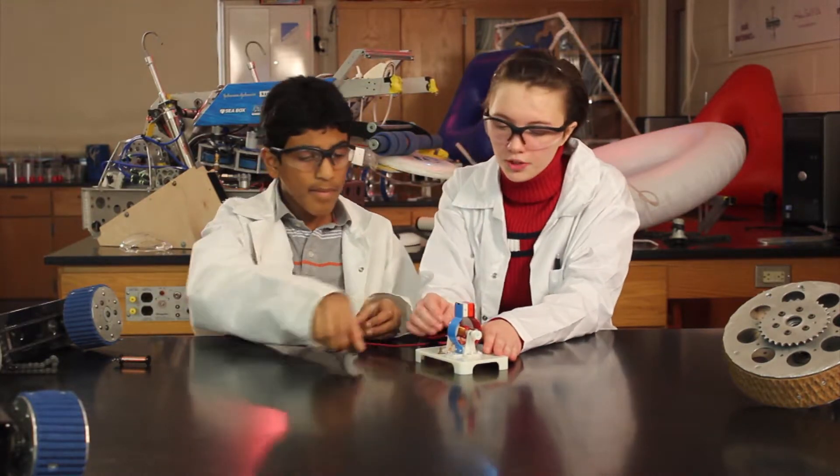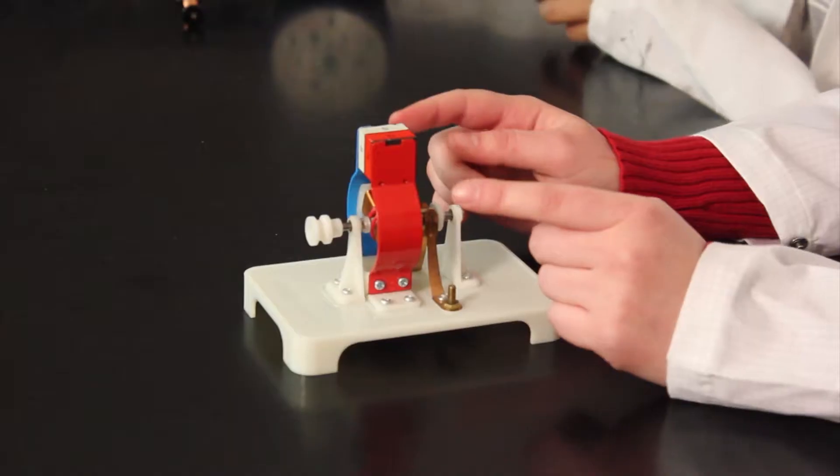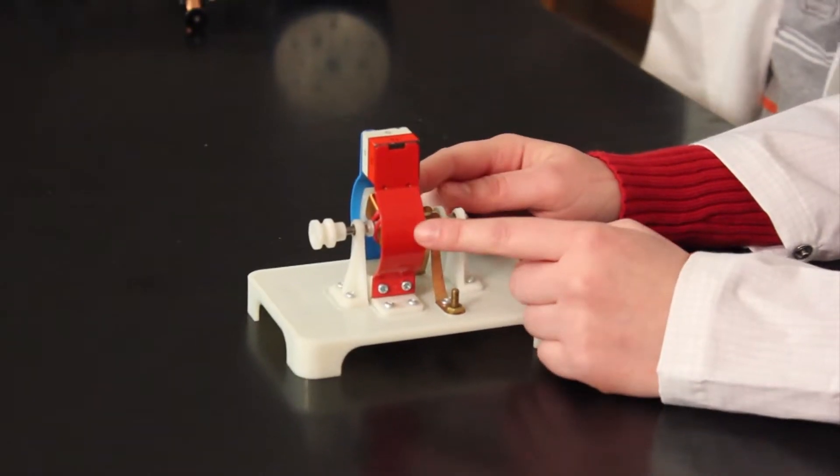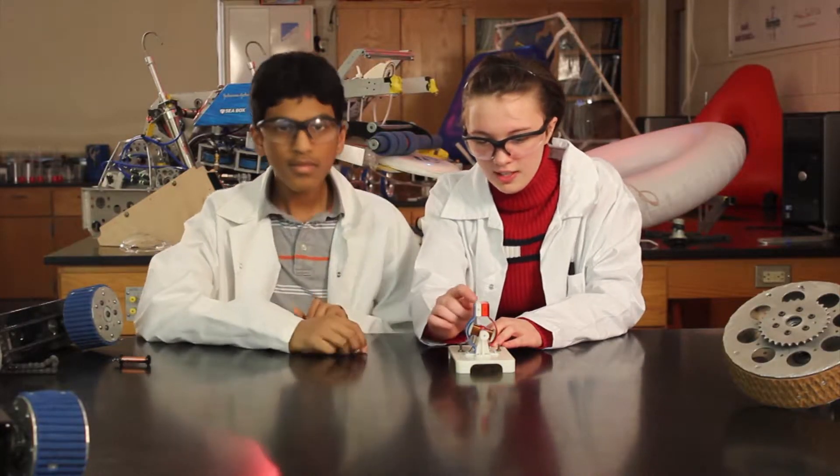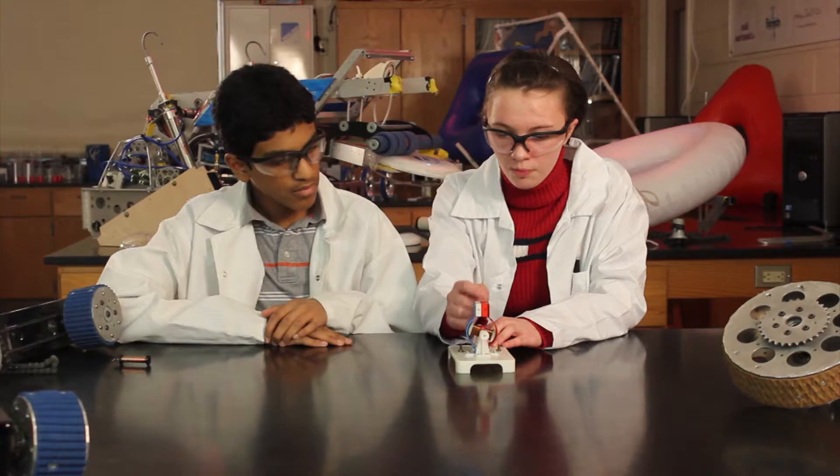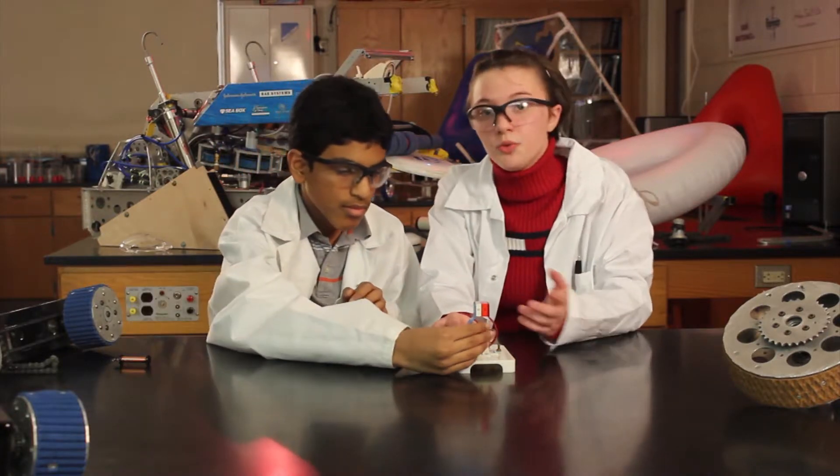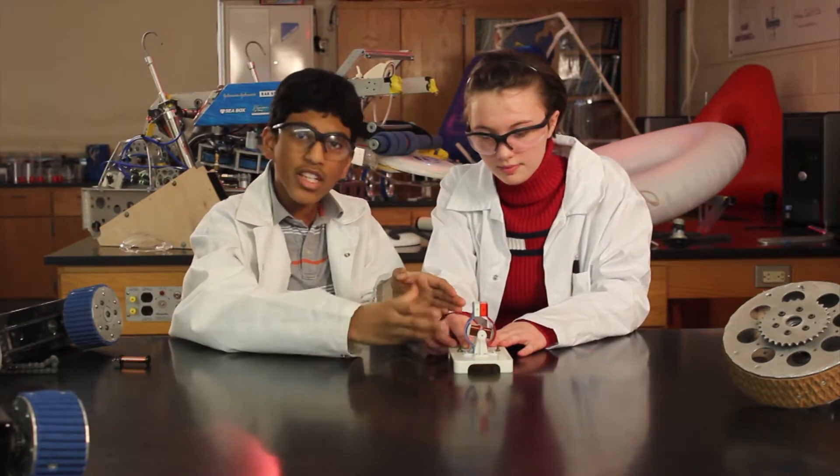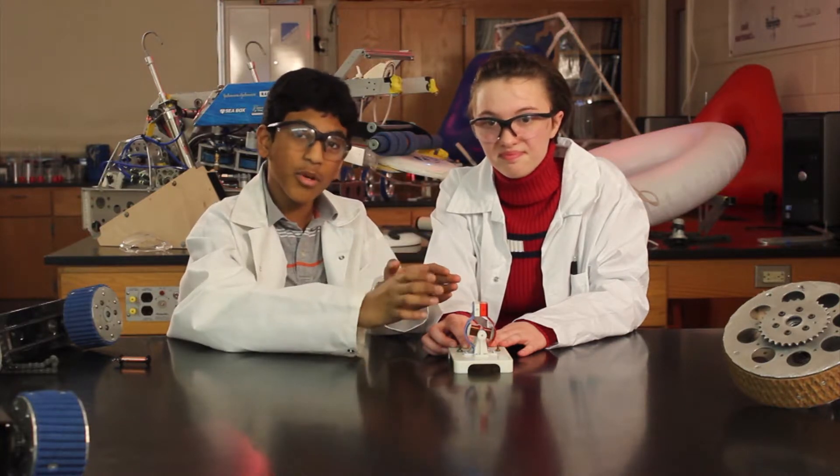Now, the way this works is the electricity flows through the opposite ends of the wire and makes a magnetic field around the coil, just like you saw in the last experiment. Now, this magnetic field interacts with the magnet at the top of the motor. It is attracted first and then repelled by the other end of the magnet, and that's what causes it to spin in a continuous circle. This model right here is the basic inside workings of an electric motor.